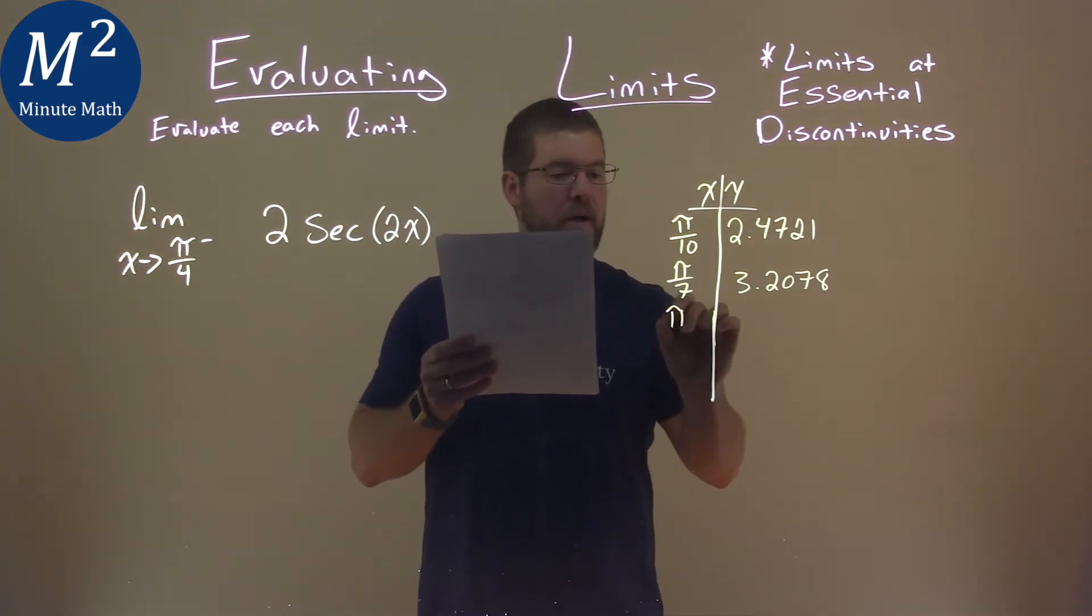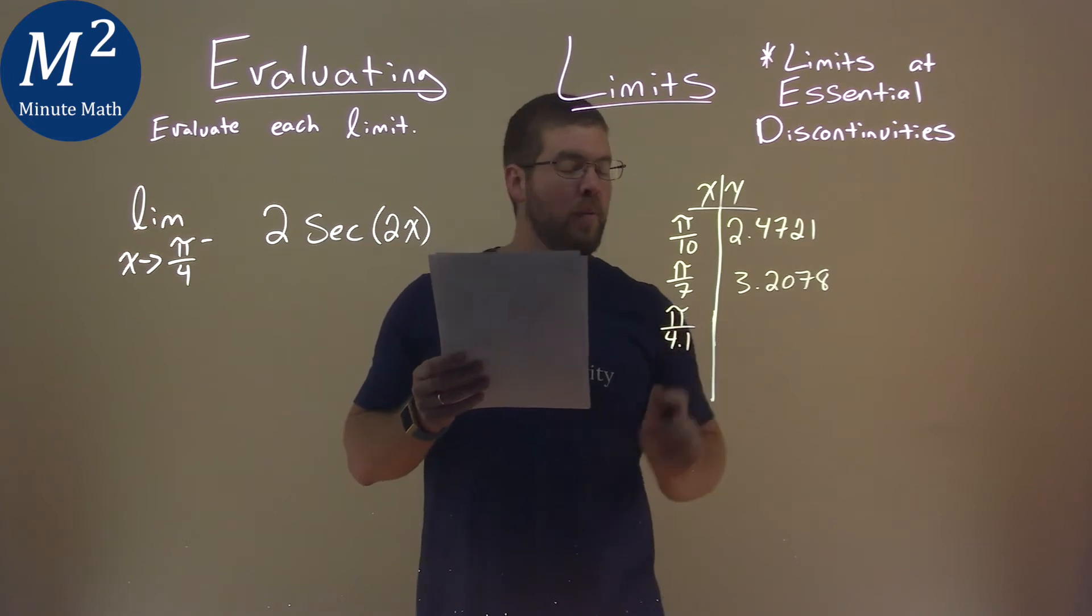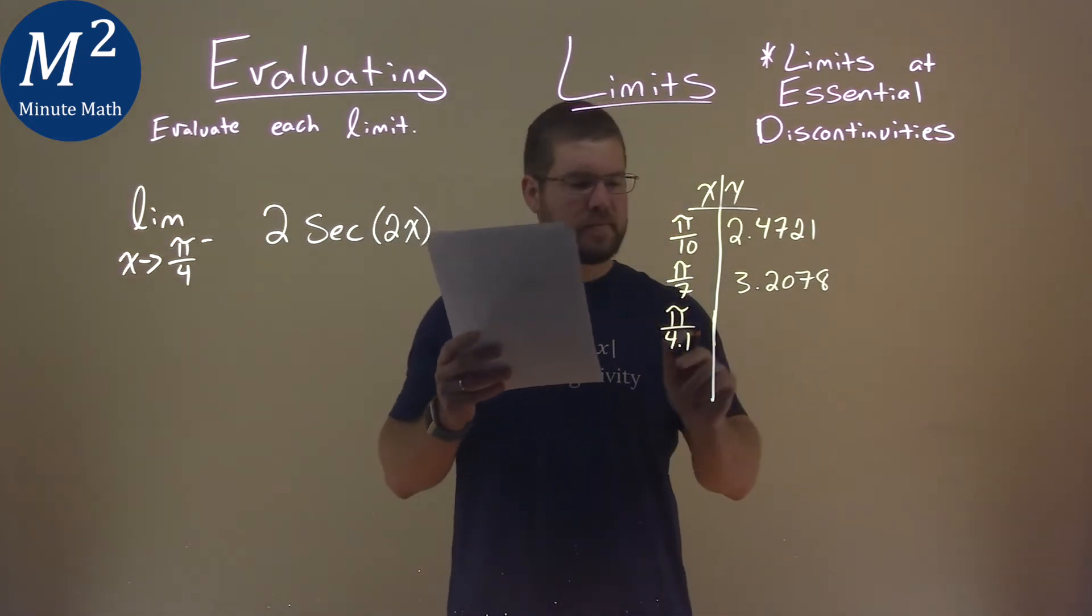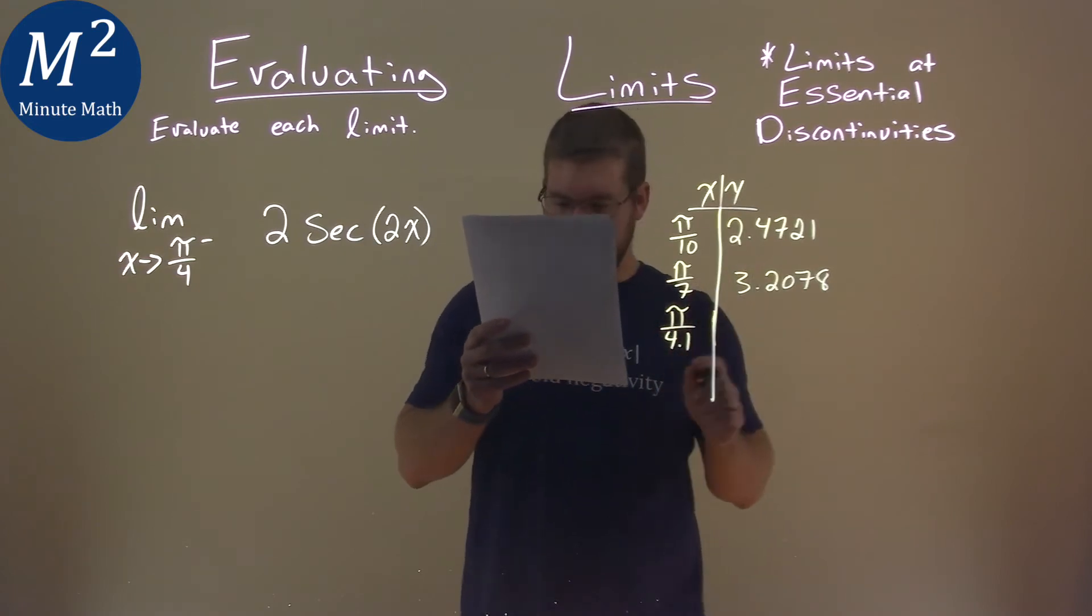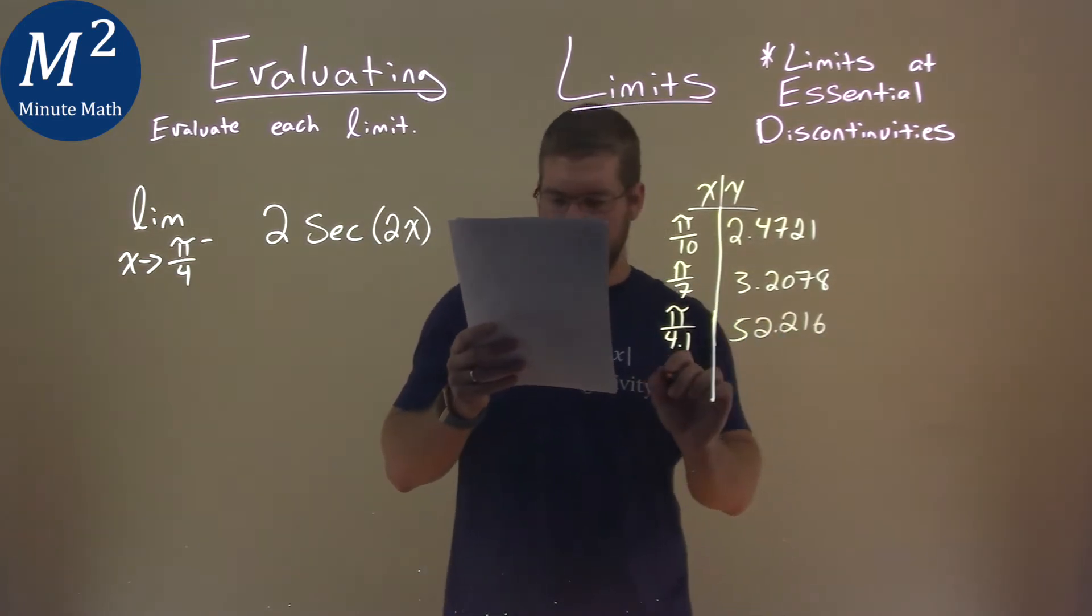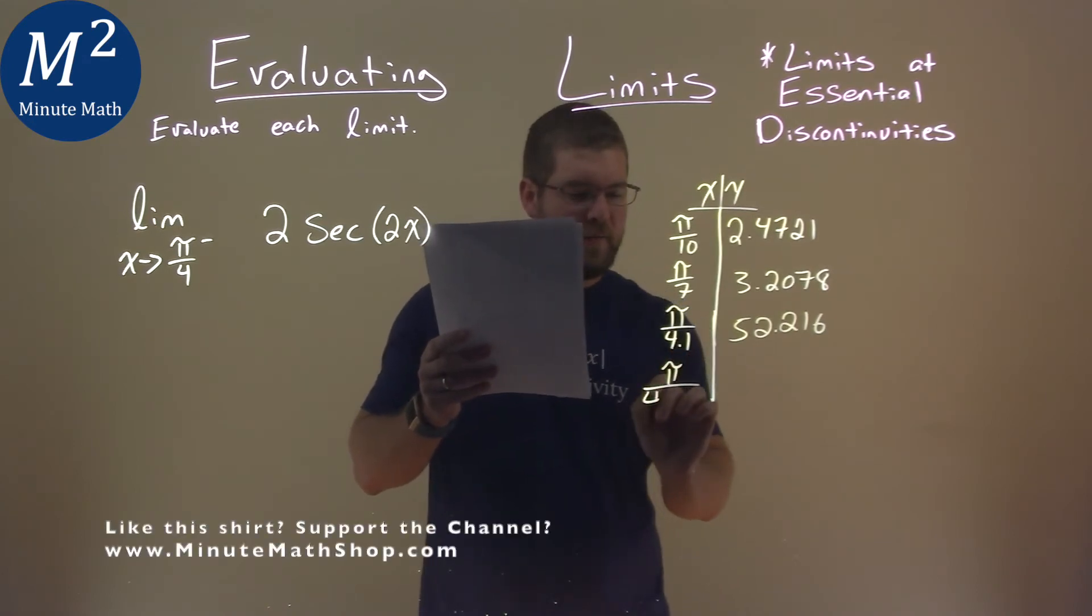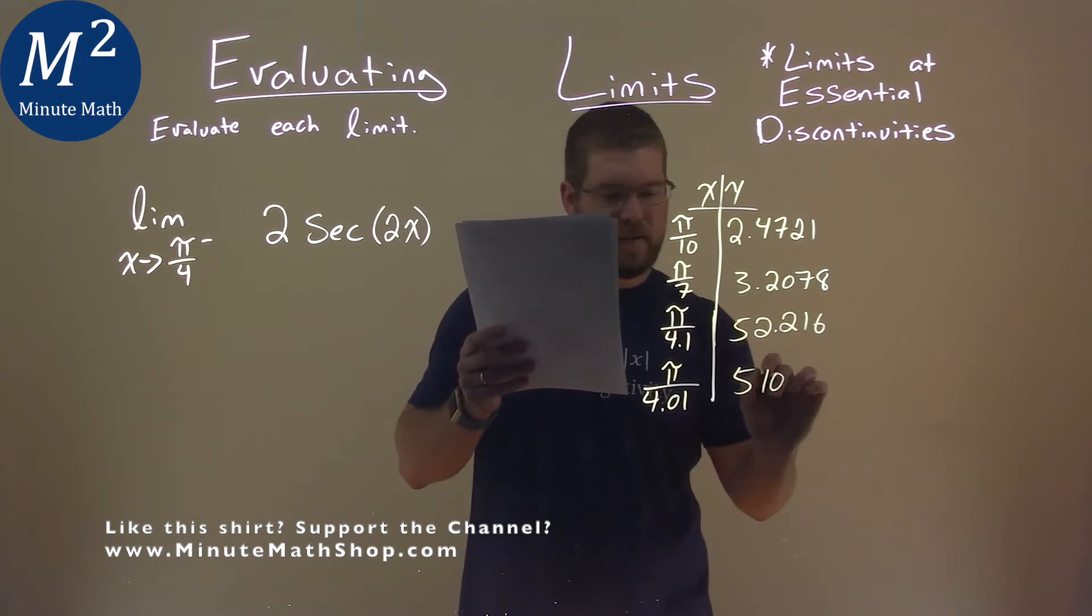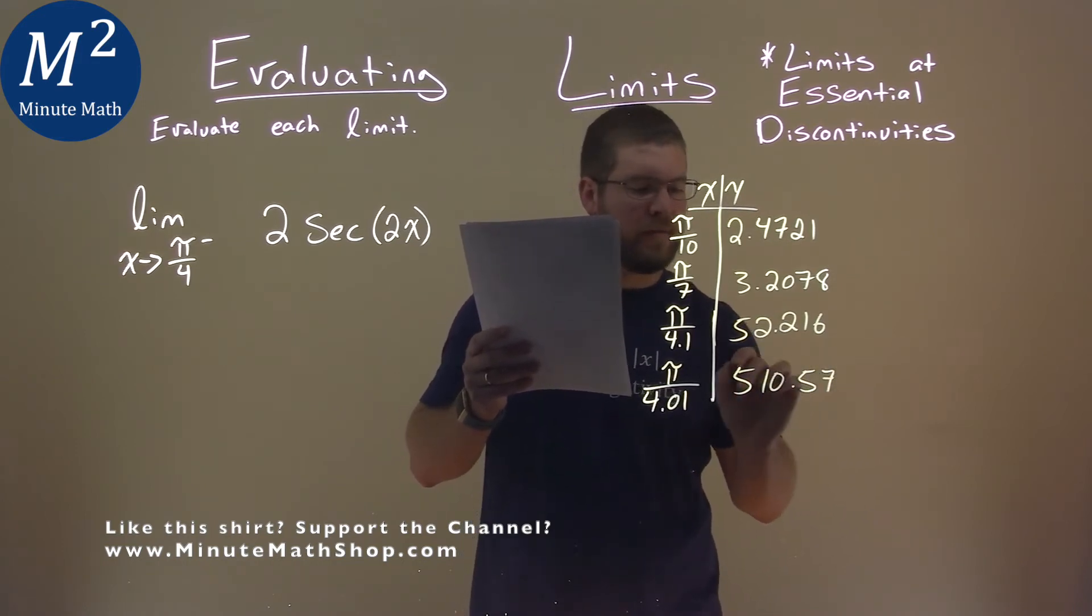Pi over 4.1 right here, pi over 4.1, getting closer to 4. I know fractions and decimals, but it's okay. I got 52.216. And what about pi over 4.01? And I got 510.57, again, rounded.